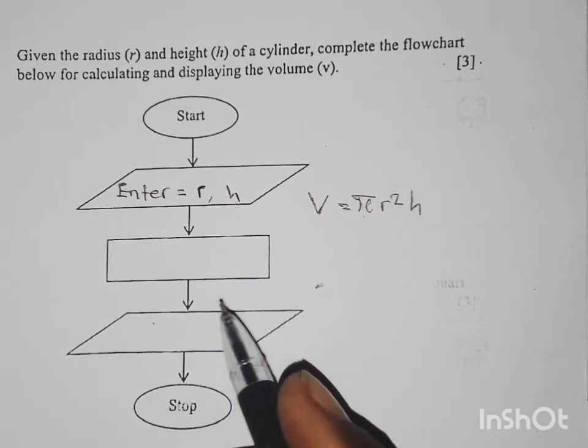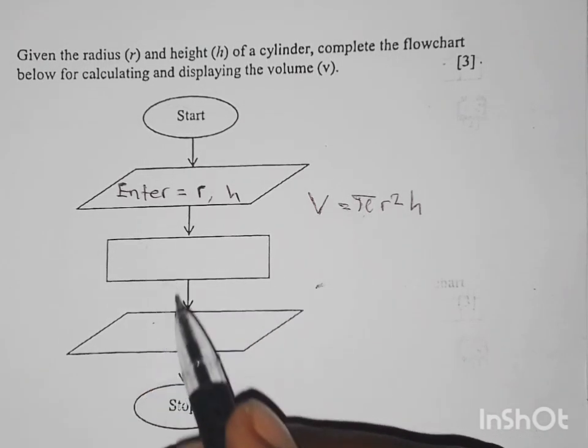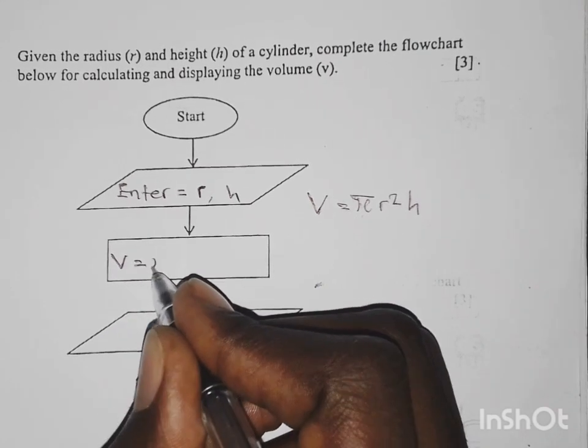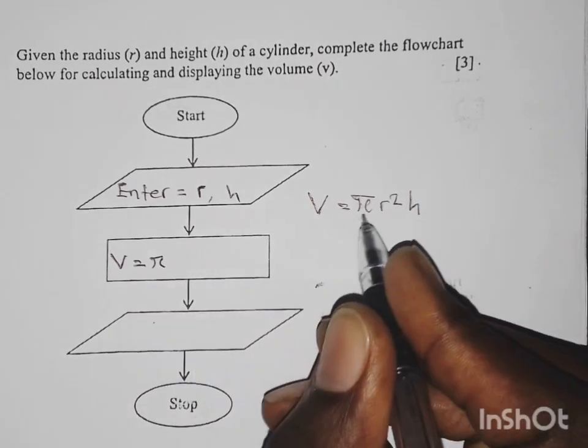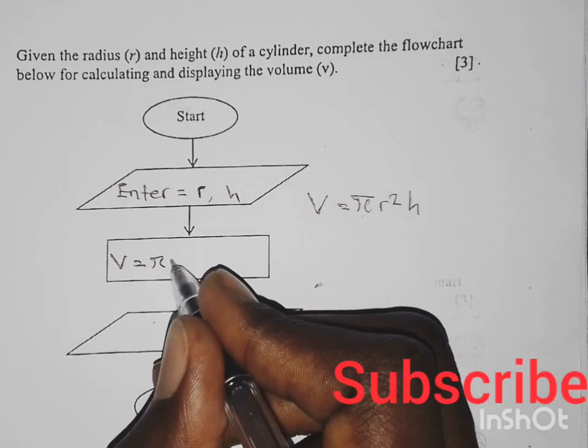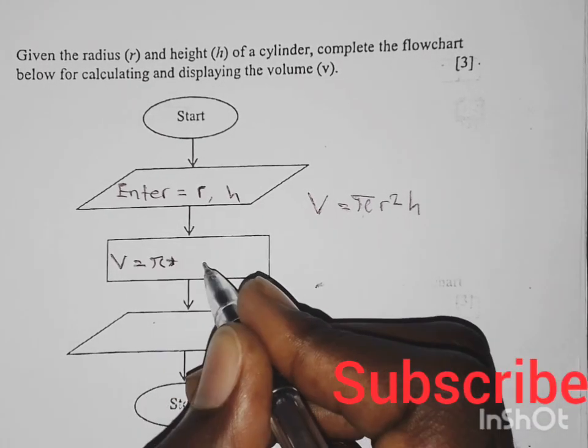In the rectangle we said here you enter the formula. So you're going to write V equals pi, then remember this symbol means times, so you put a star, r star r star h.